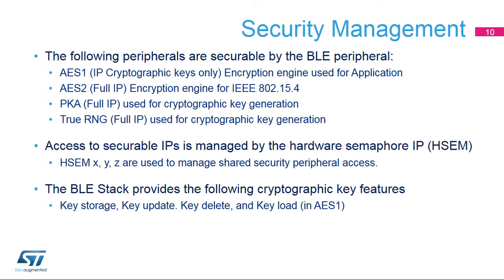Some security peripherals are securable by the Cortex-M0 Plus to grant exclusive access to the Bluetooth Low-Energy peripheral. The AES-2, PKA, and True-RNG functions can be fully secured for use by the Bluetooth Low-Energy peripheral. The AES-1 cryptographic keys can be secured so that secure keys can be used to encrypt data by the application Cortex-M4.